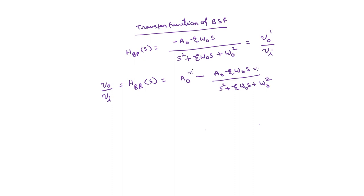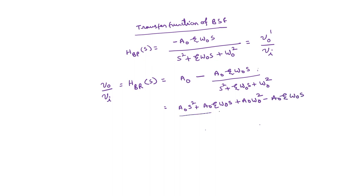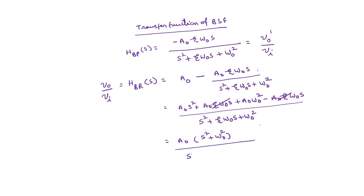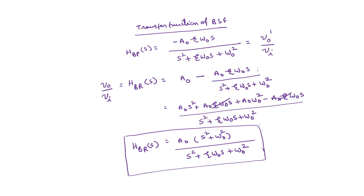Expanding and simplifying: V0/Vi = [A0·s² + A0·ζω0·s + A0·ω0² − A0·ζω0·s] / (s² + ζω0·s + ω0²). The ζω0·s terms cancel, giving the transfer function of the band stop filter as: H_band_stop = A0·(s² + ω0²) / (s² + ζω0·s + ω0²). This confirms it acts as a band reject filter.